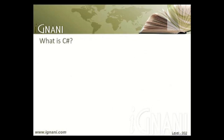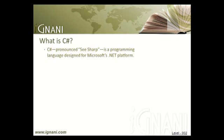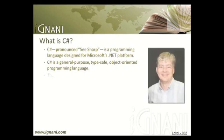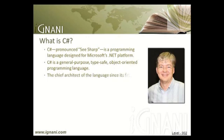What is C-Sharp? C-Sharp is a programming language designed for Microsoft's .NET platform. C-Sharp is a general-purpose, type safe, object-oriented programming language. The chief architect of the language since its first version is Anders Hejlsberg, creator of Turbo Pascal and architect of Delphi.